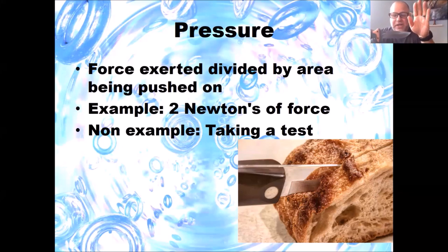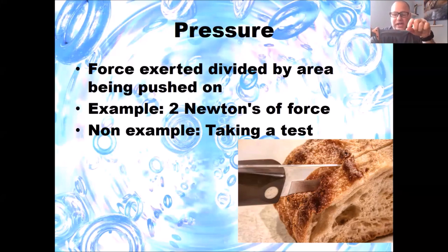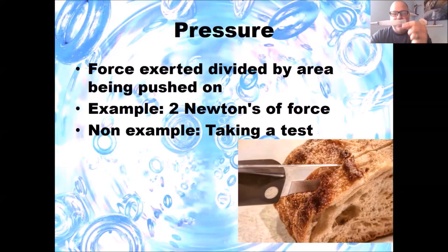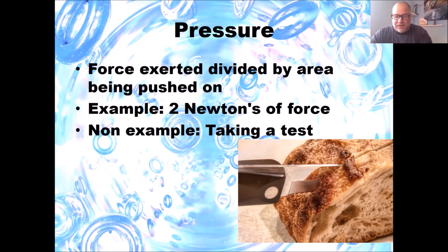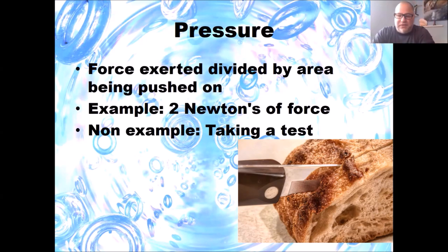So with pressure, there are two big things — how much force is being pushed on the object, and over what area. With a sharp knife, it focuses all that pressure in one tiny little spot. With a dull knife, the area is much bigger — the place that's actually cutting the food is much wider, so you don't get as good a result. So if you've got something hard to cut, make sure your knife is really sharp and it makes your work much easier.